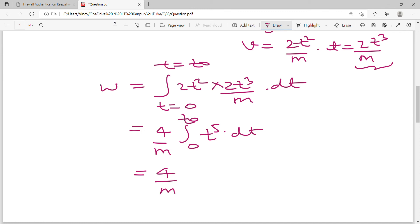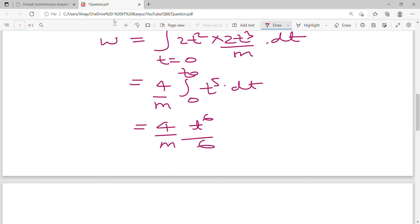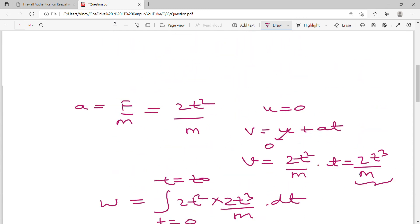That means x to the power n plus 1 upon n plus 1. So how much is it? 4 upon M, t to the power 6 upon 6 from 0 to t₀. If you want to simplify, that is fine. So third option is correct.